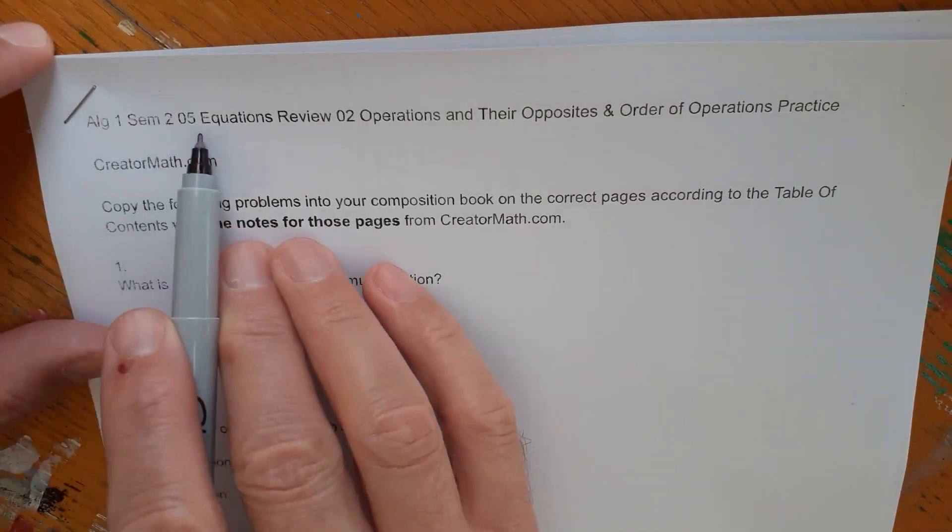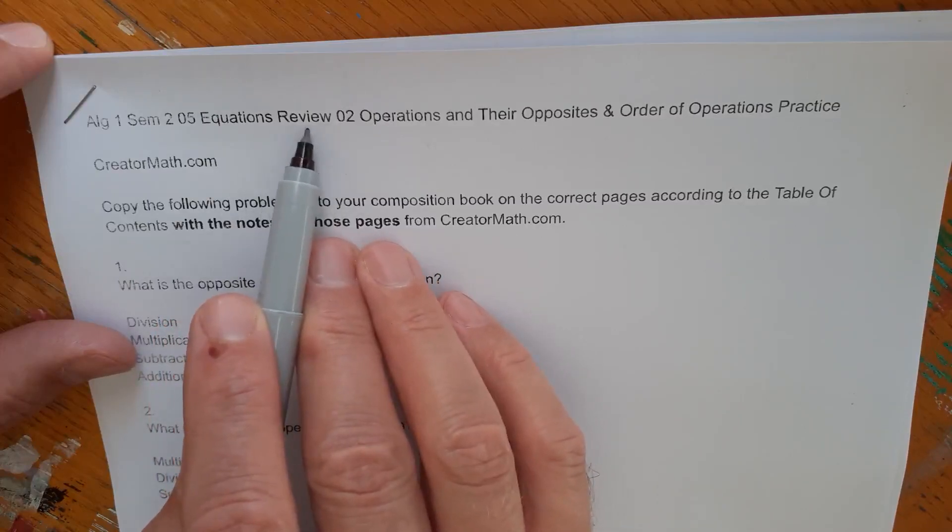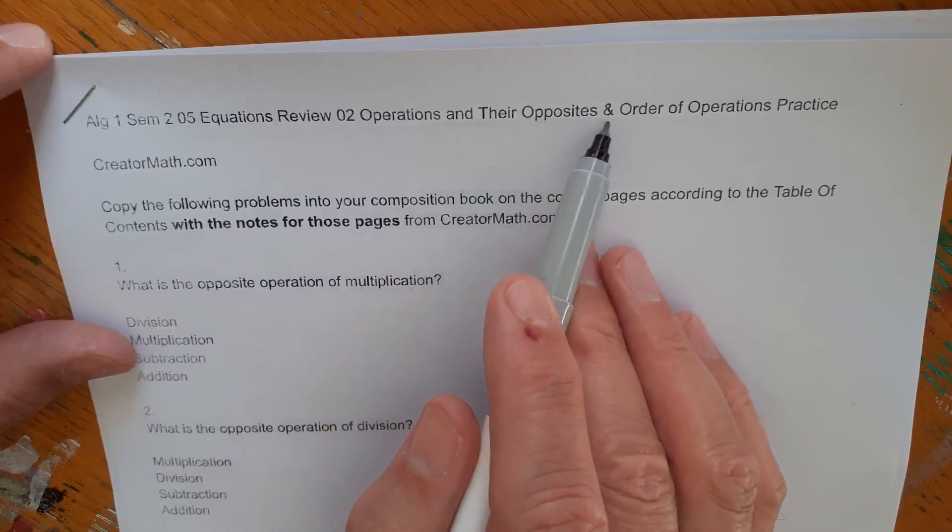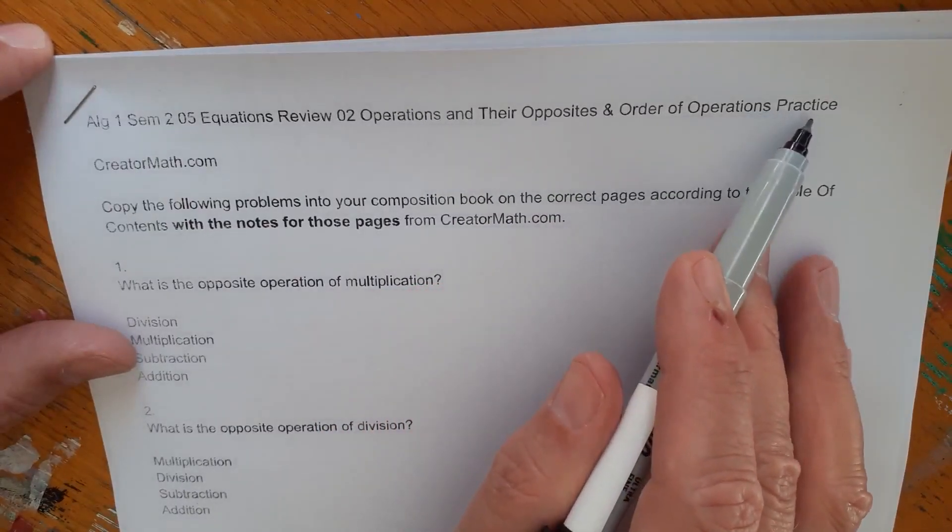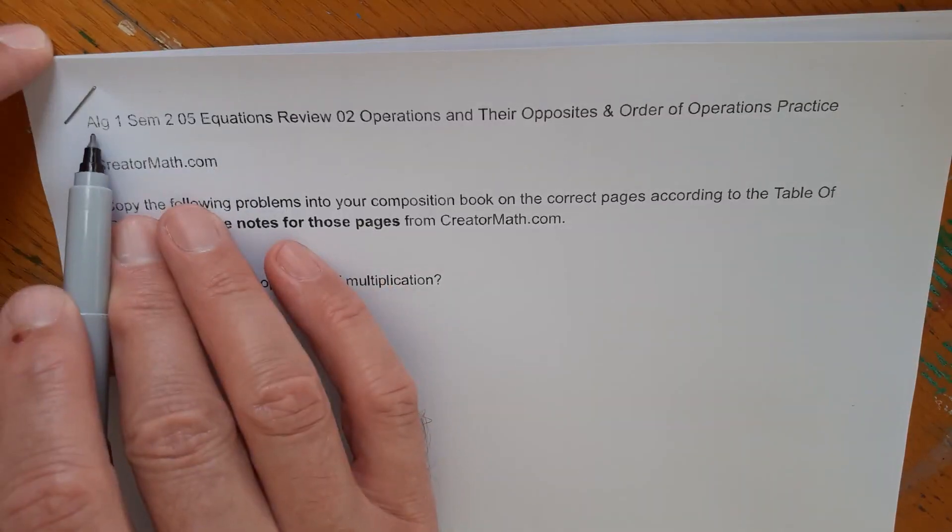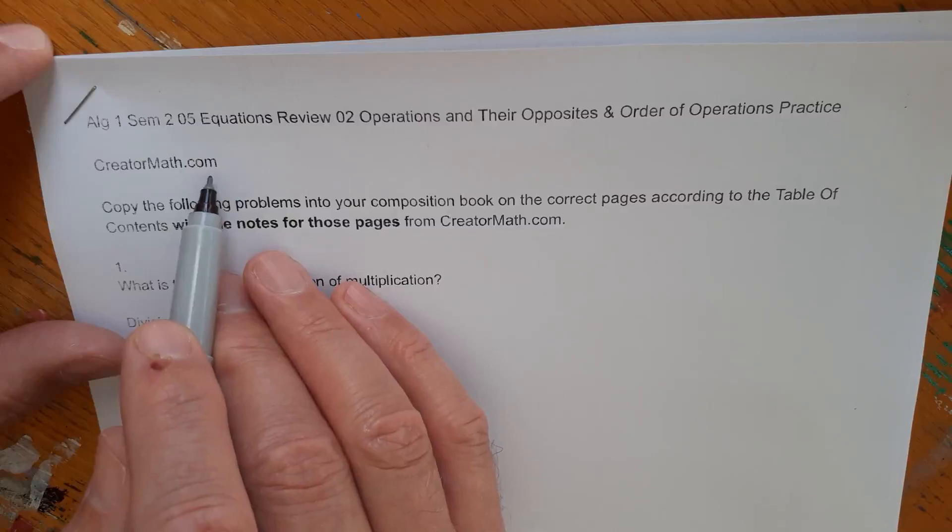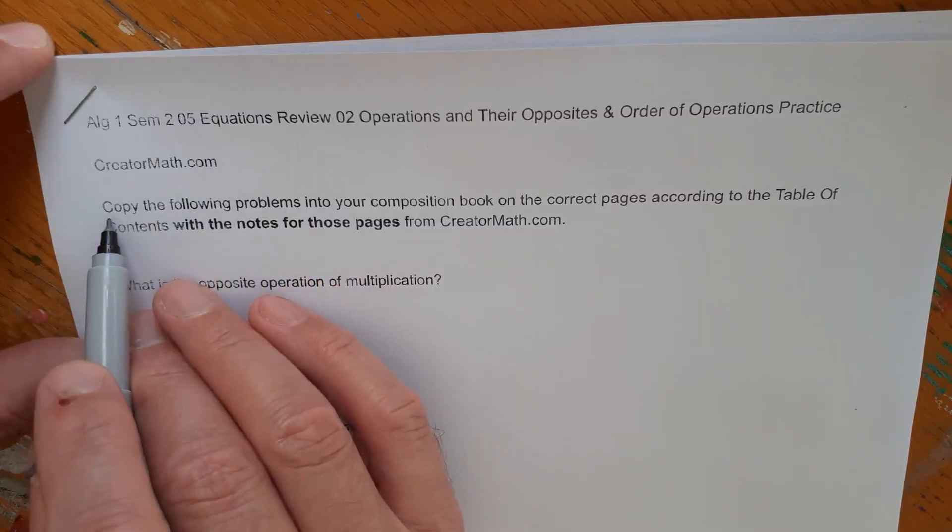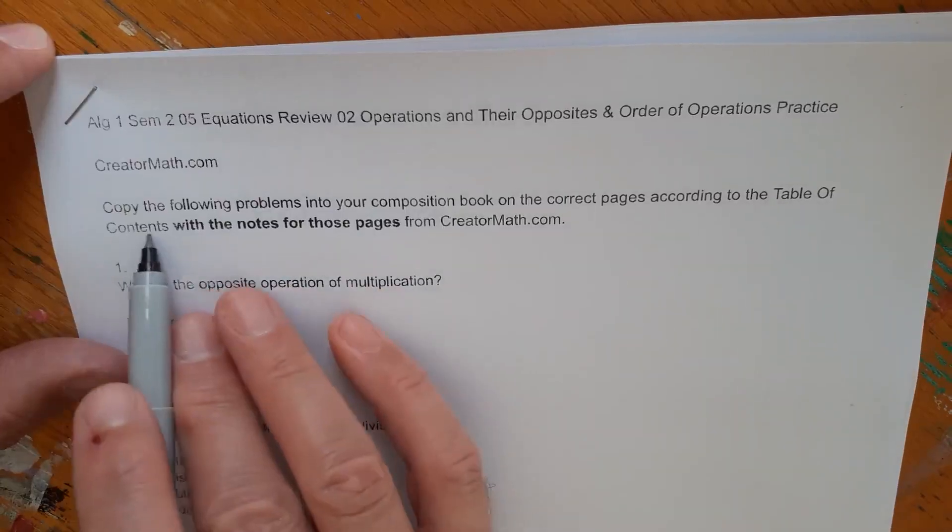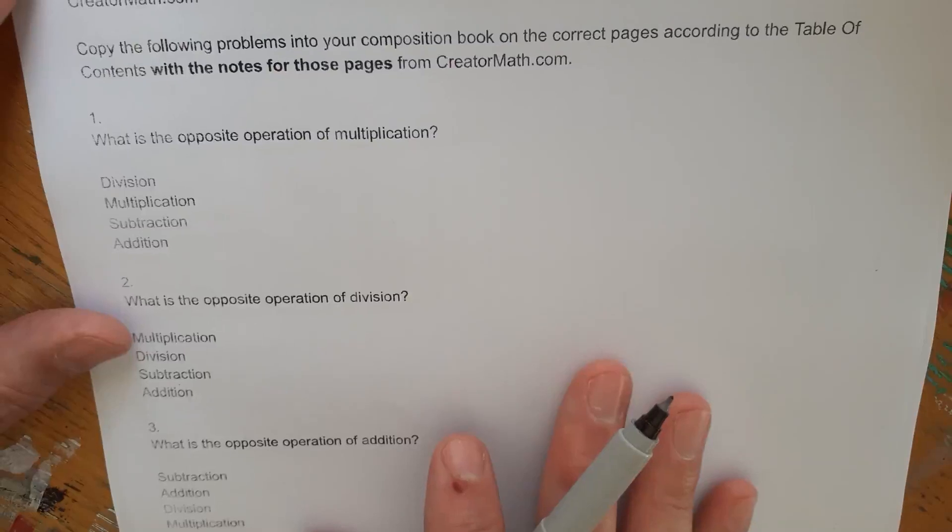This is Algebra 1, Semester 2. It's the fifth unit called Equations Review. We've already done equations, but now we're reviewing it. And it's the second lesson called Operations and Their Opposites and Order of Operations Practice. This is on creatormath.com under the Algebra 1 tab. The instructions are copy the following problems into your composition book on the correct pages according to the Table of Contents with the notes for those pages from creatormath.com.